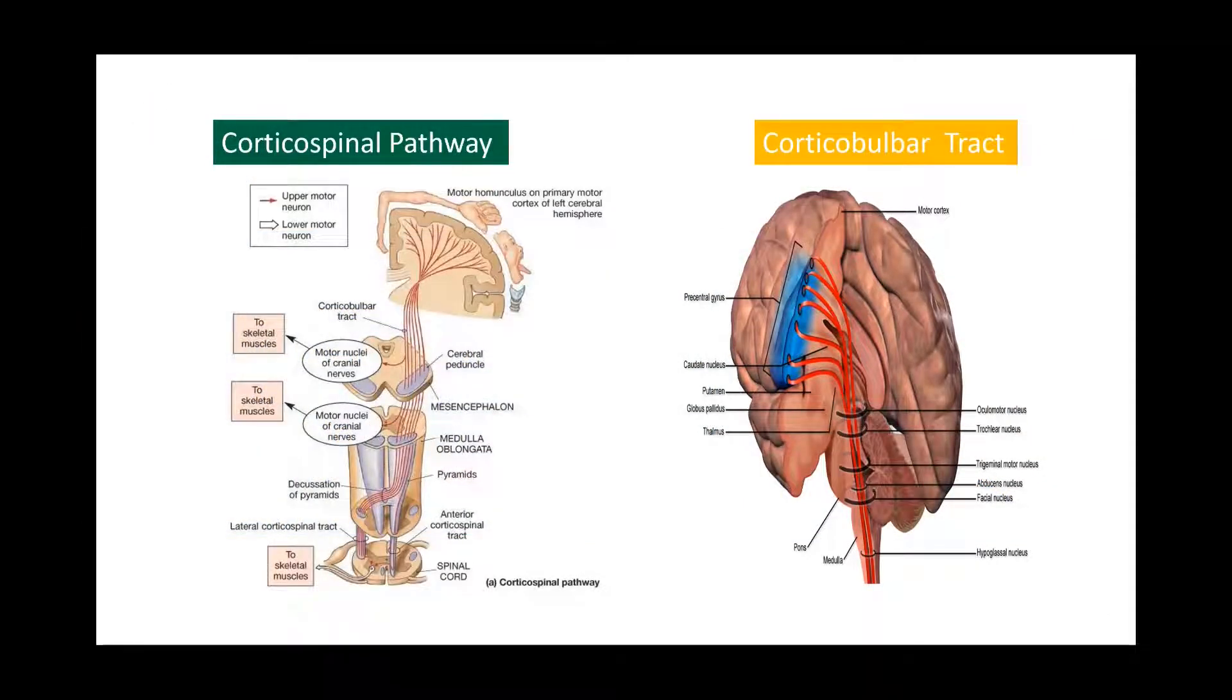To answer these questions, we have to know these motor pathways. These are the corticospinal pathway and the corticobulbar pathway. These tracts originate in the cerebral cortex and carry motor fibers to the spinal cord. They are responsible for the voluntary control of the musculature of the body.